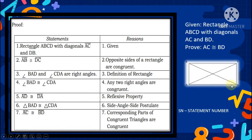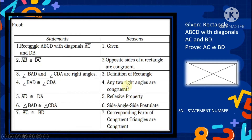Statement 5: side AB is congruent to side DA — reflexive property. Statement 6: triangle BAD is congruent to triangle CDA — side-angle-side postulate. Always review your definitions of terms and postulates. Statement 7: side AC is congruent to side BD — corresponding parts of congruent triangles are congruent (CPCTC).